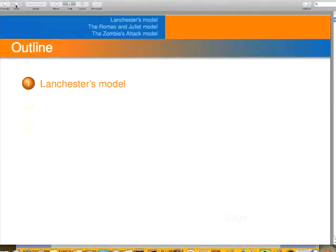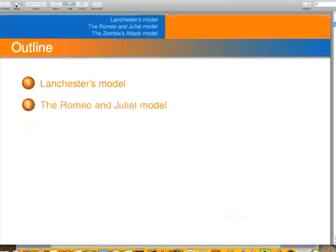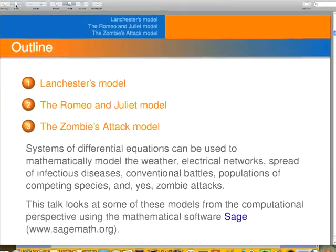We'll start with Lancaster's model, then go to the Romeo and Juliet model. The zombie attack model is the last one. You can use differential equations to model the weather, electrical networks, spread of infectious diseases, conventional battles, populations of competing species, and even zombie attacks.